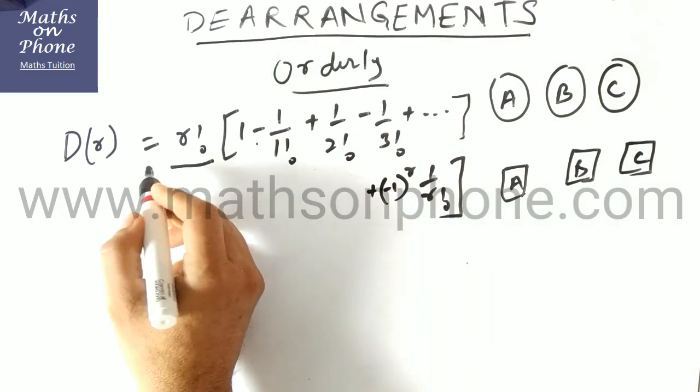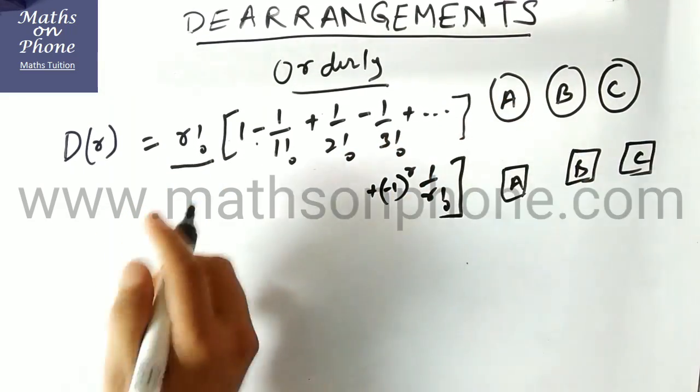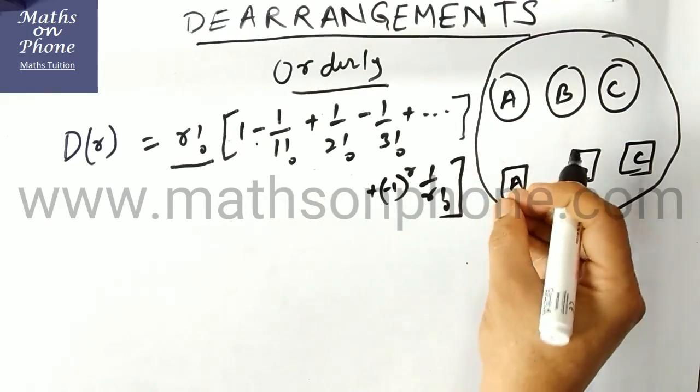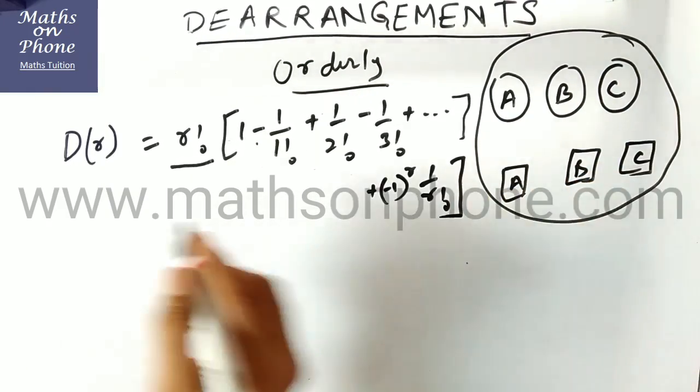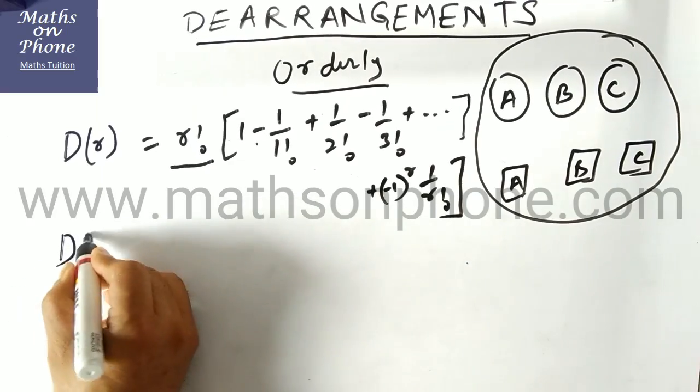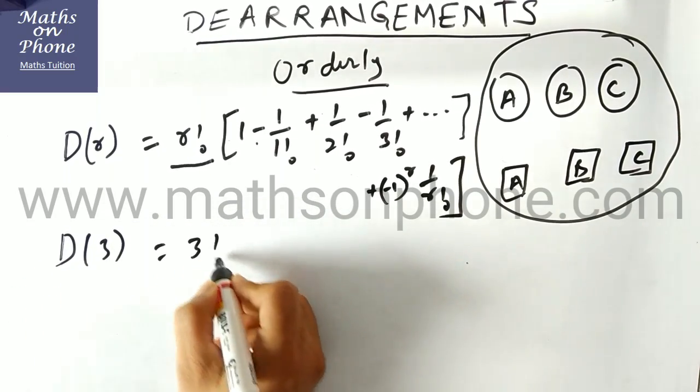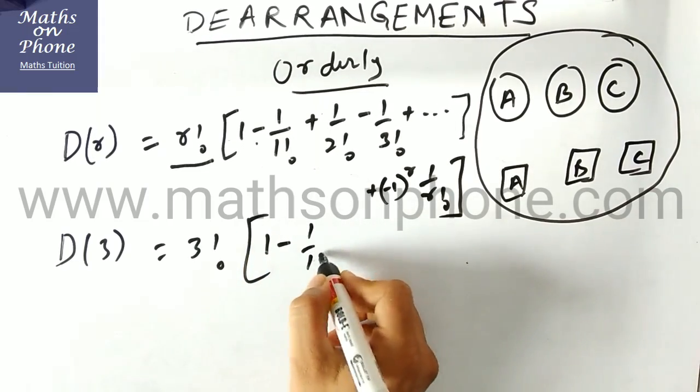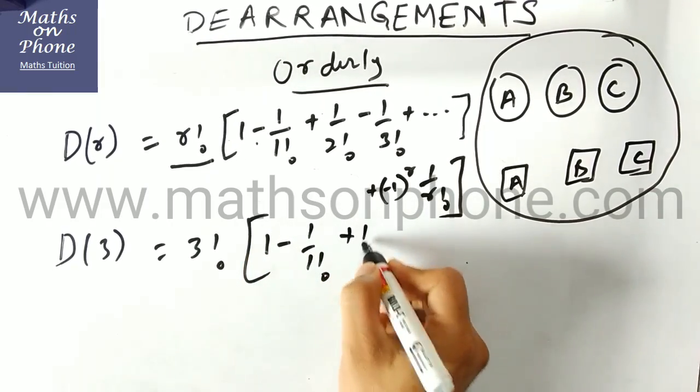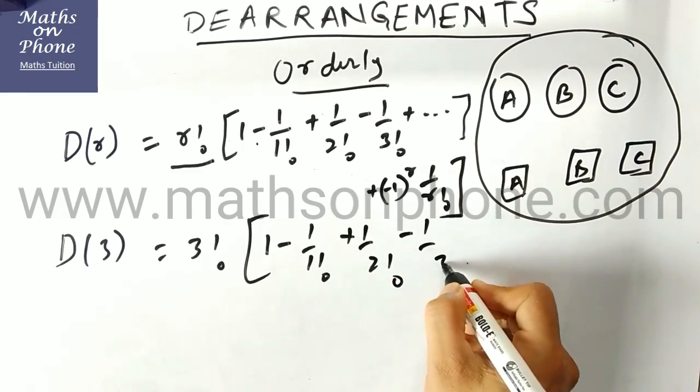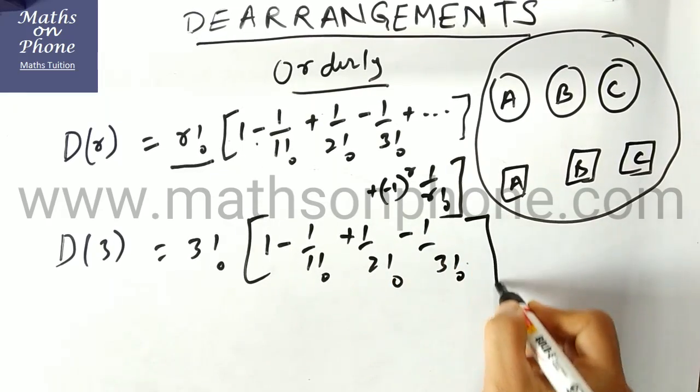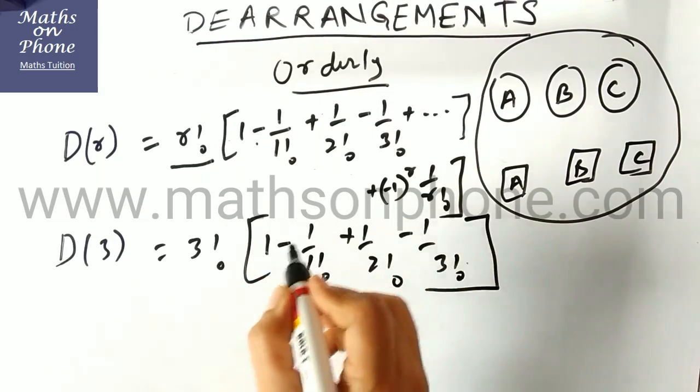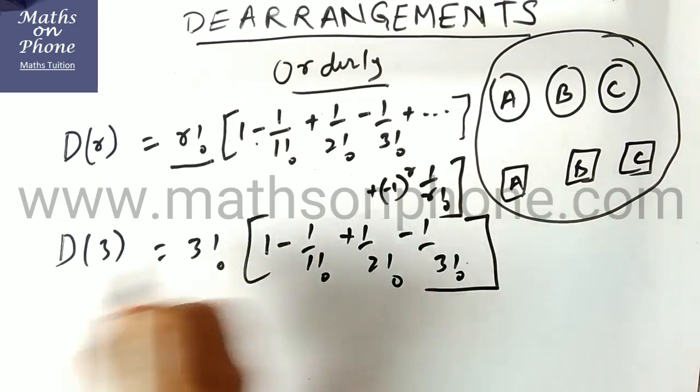If we are dearranging 3 things, suppose I want this case to be done: to dearrange these 3 things, 3 letters going to wrong envelope. So D(3) will be 3 factorial [1 minus 1 by 1 factorial plus 1 by 2 factorial minus 1 by 3 factorial]. We will stop here. This is the basic thing we have to do for finding the derangement.